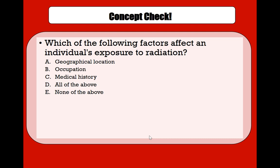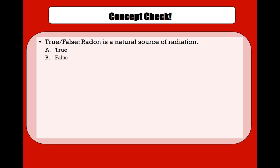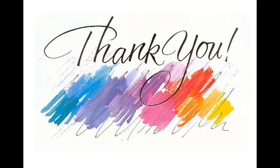Quick concept check: which of the following factors affects an individual's exposure to radiation? The answer is D — all of the above — because geographical location determines natural exposure, occupation may involve radiation exposure, and medical history includes significant X-rays or radiation therapy. Another quick concept check: true or false — radon is a natural source of radiation. True. Thank you.